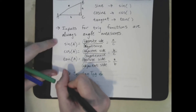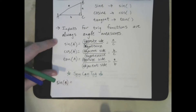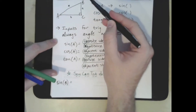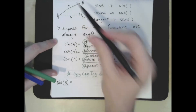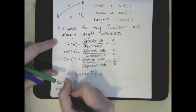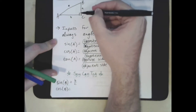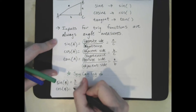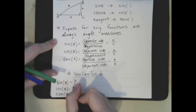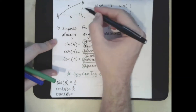Now let's look at the trig ratios for angle B. Sine of B is opposite over hypotenuse — the opposite side of B is little b and the hypotenuse is still c, so this is b over c. Cosine of B: the adjacent side to B is little a and the hypotenuse is c, so that's a over c. Tangent of B is opposite over adjacent, which is b over a.